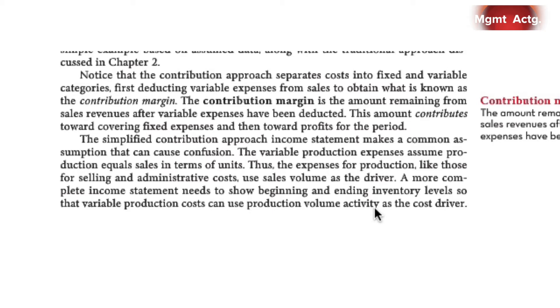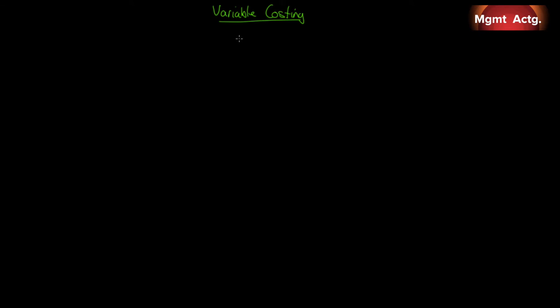With that introduction from Chapter 3 out of the way, we're ready to proceed with Chapter 8 and variable costing. You'll recall from Chapter 2 that when we talked about period and product costs, we identified our product costs as direct material, direct labor, and manufacturing overhead. Here, we're going to divide it into two components: a variable portion of manufacturing overhead and a fixed component of manufacturing overhead — dividing our costs by behavior, not just function. These are called product costs because they flow into inventory first before hitting the income statement.